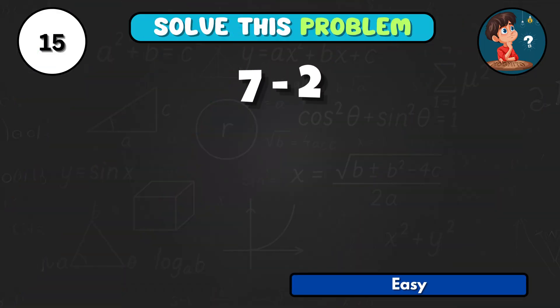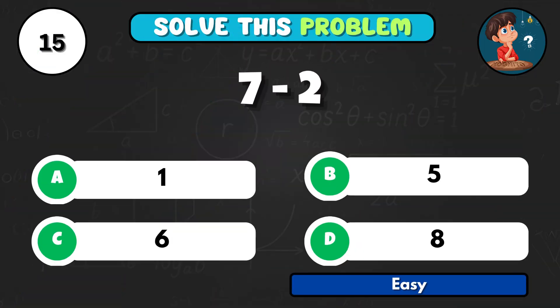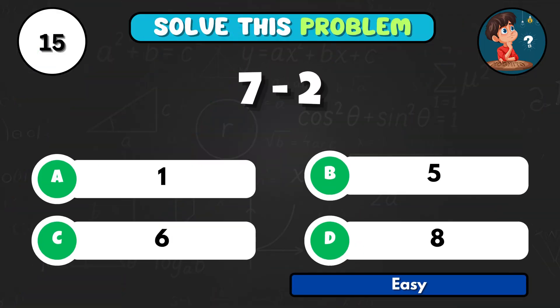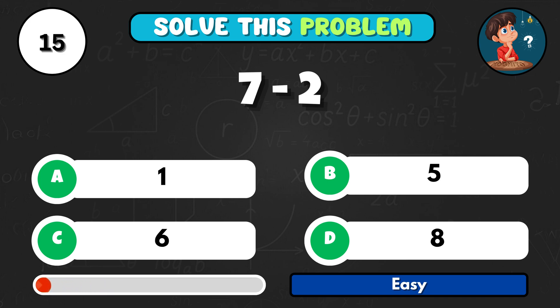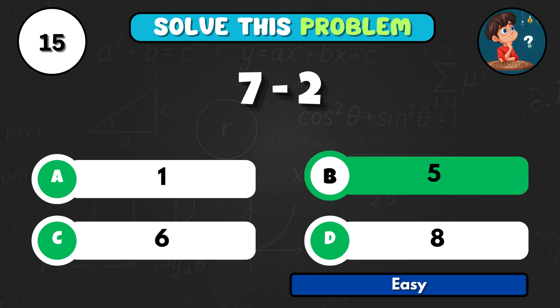7 take away 2 is equal to… The solution is B5.